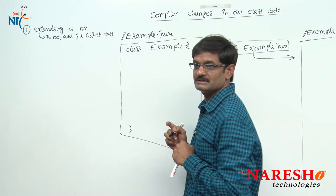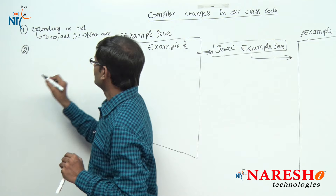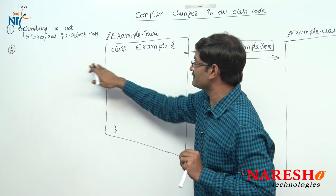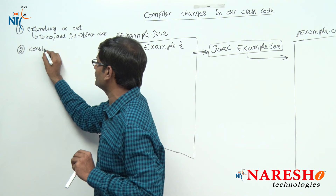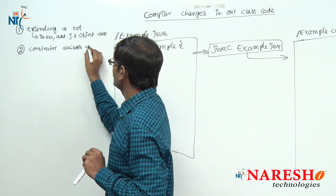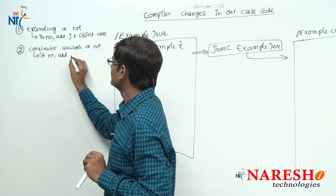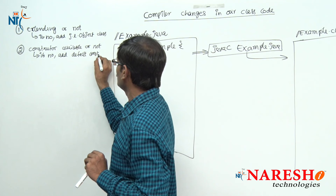First point: checking if our class extends any other class. If yes, it leaves it. If no, it will add java.lang.Object class as our super class. Second point: it goes into the class and verifies if this class contains any constructors. If no constructor is there, it will add a default constructor.